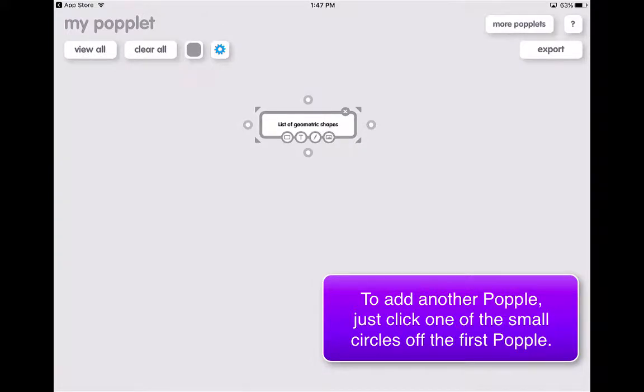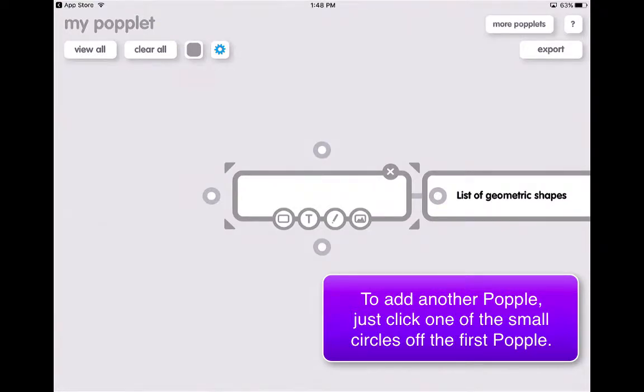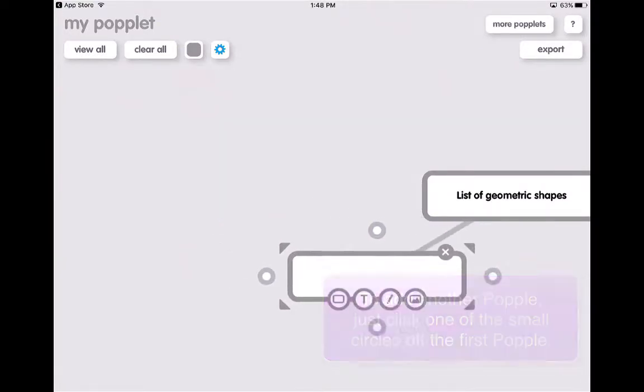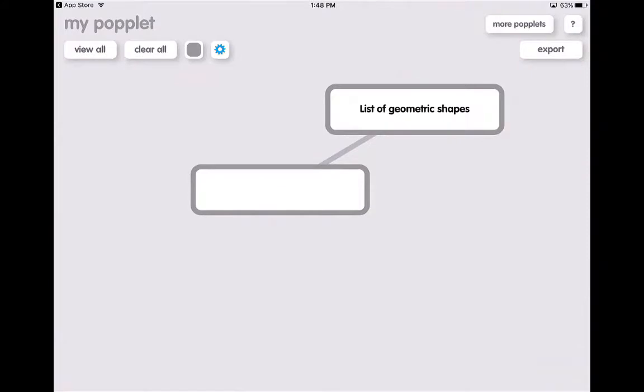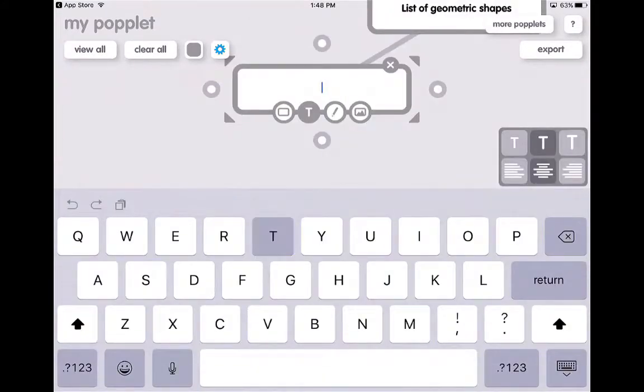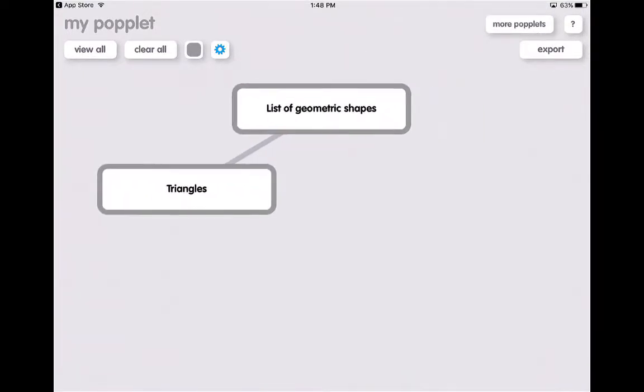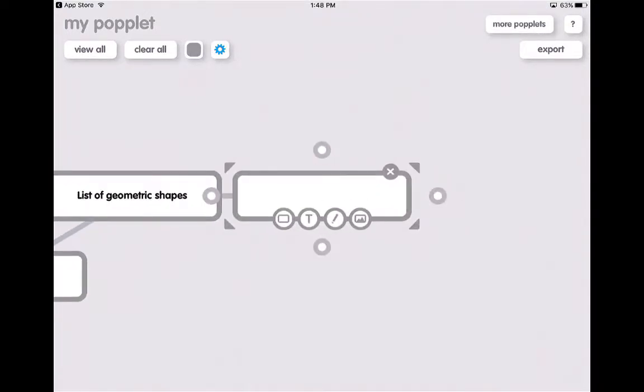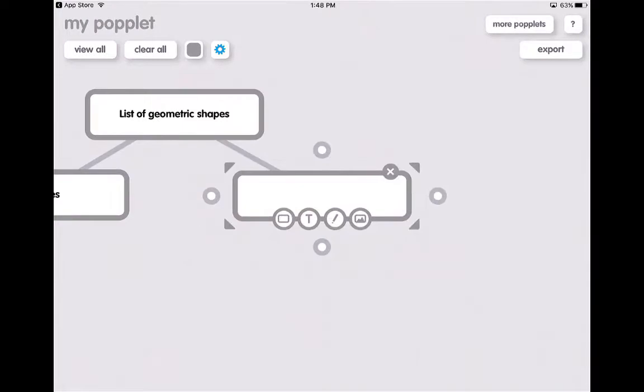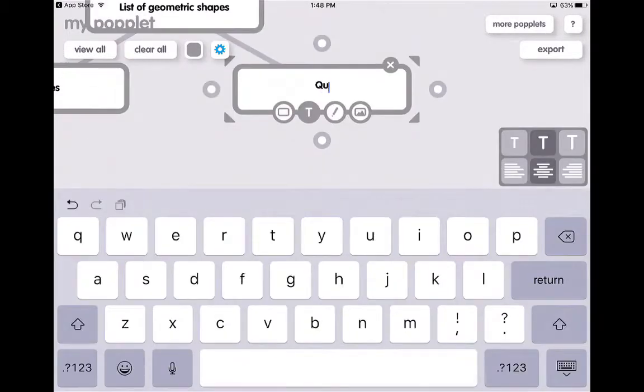Now if I click back on the popple, and I click any one of the circles on the outside of the popple, it will add one of the popples to it. And I can drag this anywhere that I want. So maybe this title is triangles, and then this one is, I can make another one, quadrilaterals.